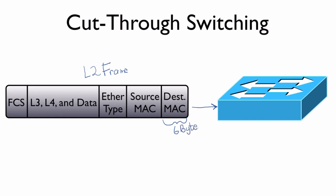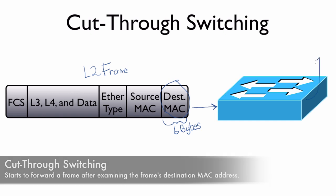This six-byte MAC address is examined and the switch says, based on what I've previously learned, I know that that MAC address lives off of a particular port. So as soon as the switch receives just this much of the frame, it can start forwarding that out of an appropriate destination port.